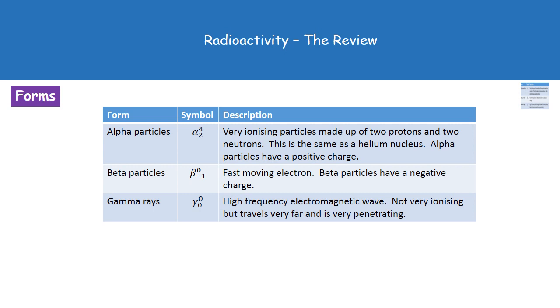We have three types of ionizing radiation: alpha particles, beta particles, and gamma rays.